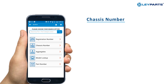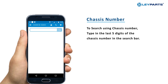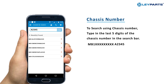Chassis Number Search: To search using Chassis Number, type in the last five digits of the Chassis Number in the search bar. Select the matching Chassis Number from the search results.